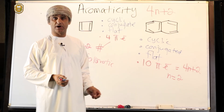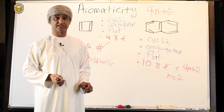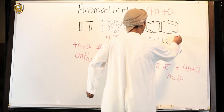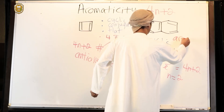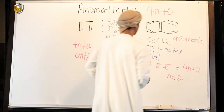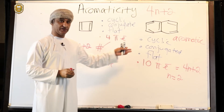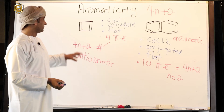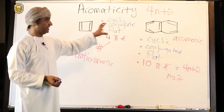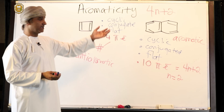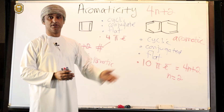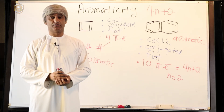So naphthalene has obeyed the Huckel rule and satisfied all four requirements for aromaticity. Therefore, naphthalene is aromatic. In summary, cyclobutadiene is an example of an anti-aromatic compound, and naphthalene is an example of an aromatic compound.